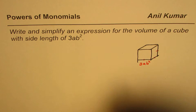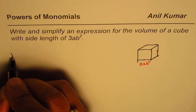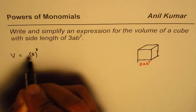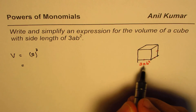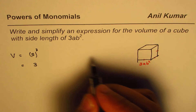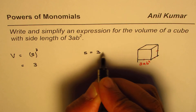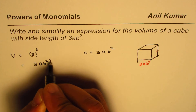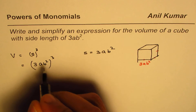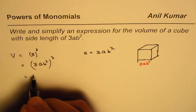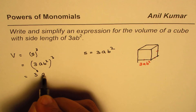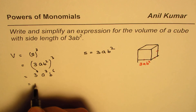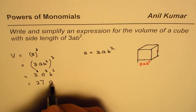We need to find the volume. All sides are equal, and the volume of a cube is side cubed — side times side times side. Each side s equals 3ab², so the volume is (3ab²)³, which gives us 3³ · a³ · b⁶. 3³ is 27, so we have 27a³b⁶.